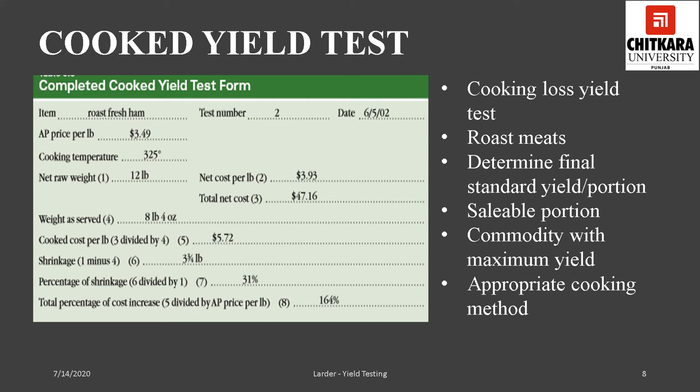The main purpose of conducting a cooking loss test is to determine which of the several available grades of commodities would yield the maximum saleable weight of the desired quality. The cooking loss test may also be used to compare the results of cooking several pieces at different temperatures, for different lengths of time, or in different methods, so as to maximize yield while keeping quality standards in consideration. Once the weight and value of the saleable portion is known, the standard portion size, price, and cost can be determined and the standard can be established.